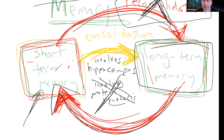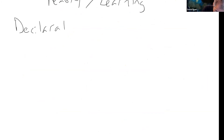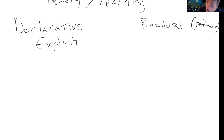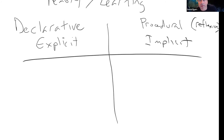Another thing related to memory is learning. There's declarative learning — also known as explicit — versus procedural or implicit learning, which your book calls reflexive. Declarative gets its name because it's stuff you can declare. For example: I know that the visual cortex is located in the occipital lobe of the brain. These are things you have explicit knowledge of — your name, what time class starts.